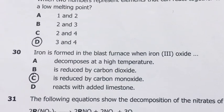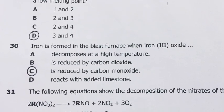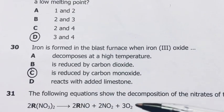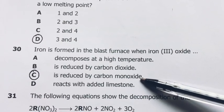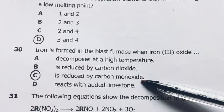Number 30. Iron is formed from the blast furnace when iron 3 oxide is reduced by carbon monoxide. That's the most appropriate answer. It is reduced by carbon monoxide. C.